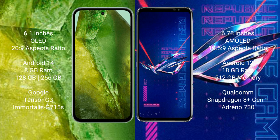Google Pixel 8a runs on the Android 14 operating system. ASUS ROG Phone 6 Pro runs on the Android 12 operating system. Google Pixel 8a comes with 6GB or 8GB RAM.